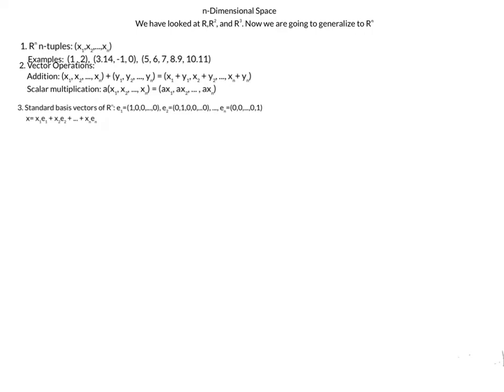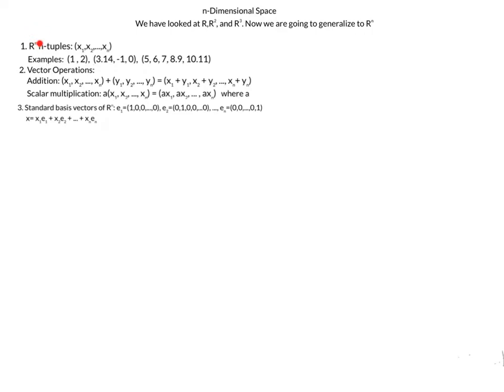In Rn, our vectors are written as n-tuples. So in two-space, R2, we had a pair; in three-space, we had a triplet. Here in five-space, we're going to have one, two, three, four, five coordinates to represent a point or a vector.